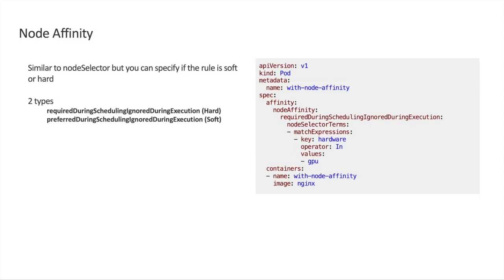Node affinity is a successor to node selector, but it introduces soft rules. The first rule, required during scheduling and ignored during execution, is a hard rule just like node selectors. The second rule, preferred during scheduling and ignored during execution, is a soft rule — meaning if you don't have capacity, try to place the pods on other nodes that do not have the label. We recommend using node affinity over node selectors.